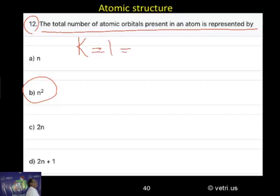First shell. So how many orbitals will be there? n squared will be there. Total number of orbitals. So n squared: 1 is 1, nothing but 1.